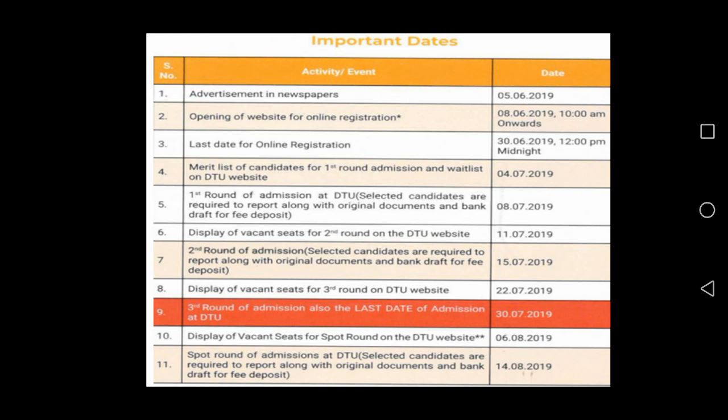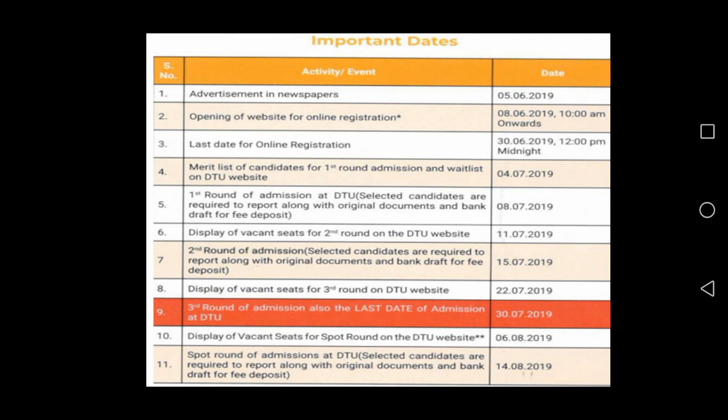Display of vacant seats for second round on the DTU website — 11-7-2019. Second round of admission for selected candidates: selected candidates are required to report along with original documents and bank draft for fee deposit — 15-7-2019. Display of vacant seats for third round on DTU website — 22-7-2019.